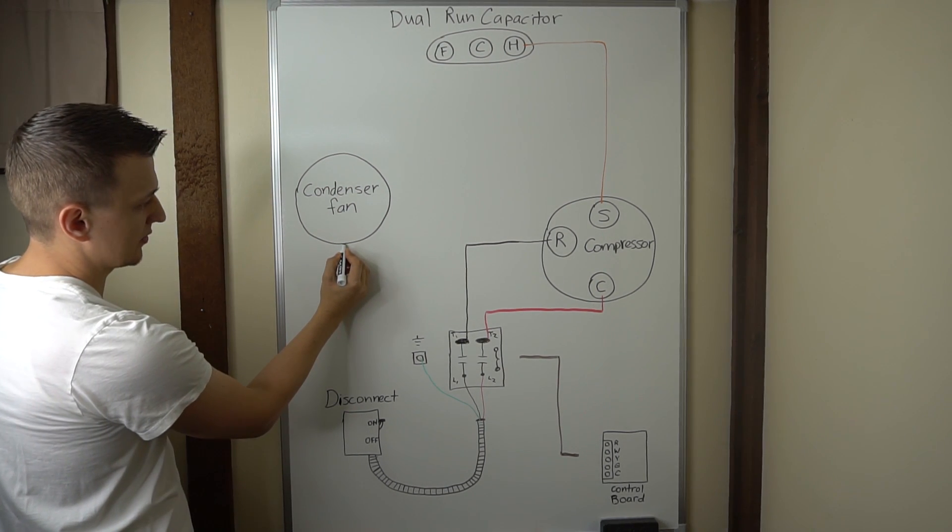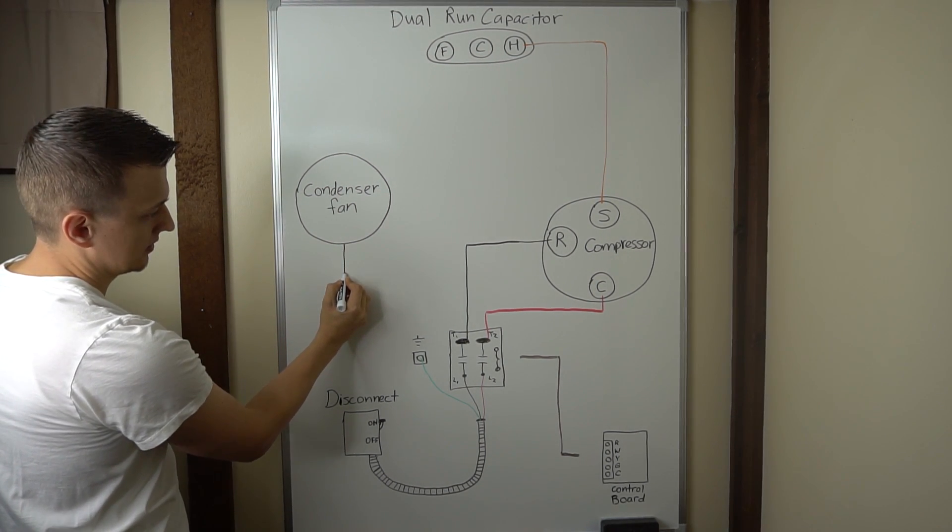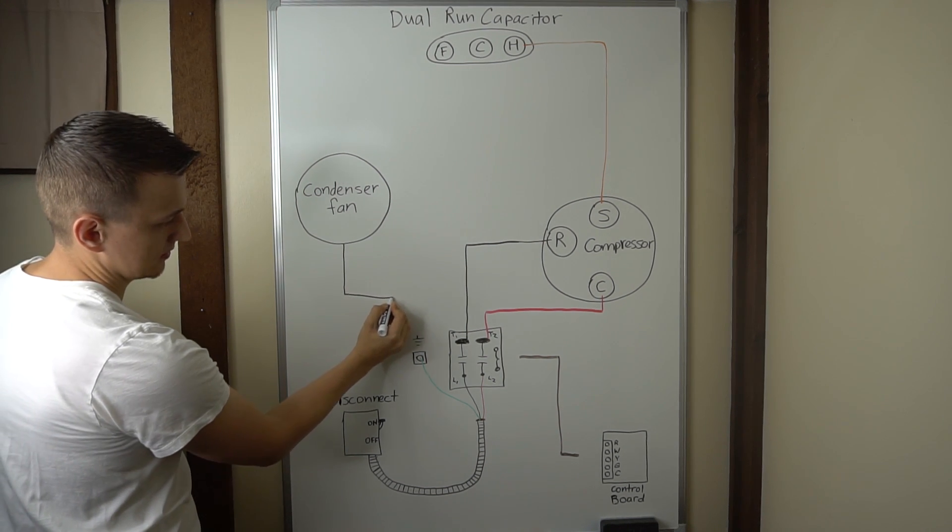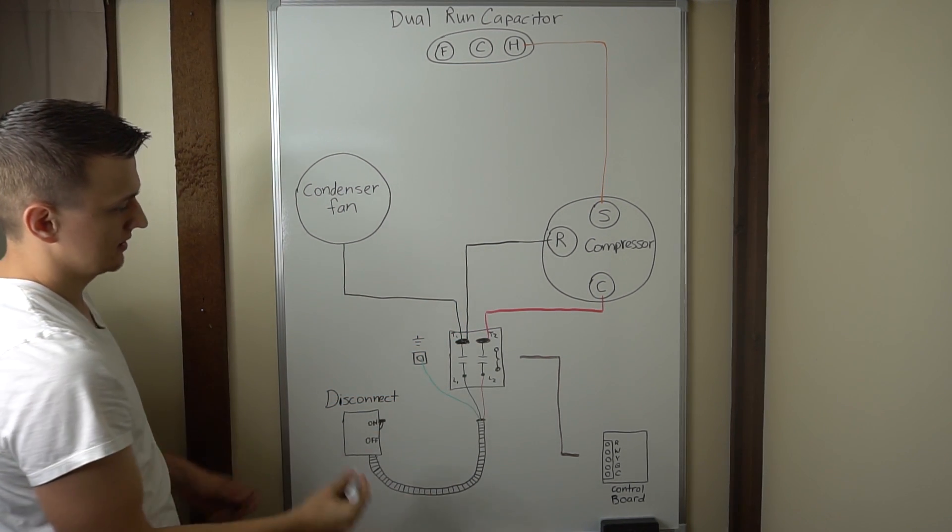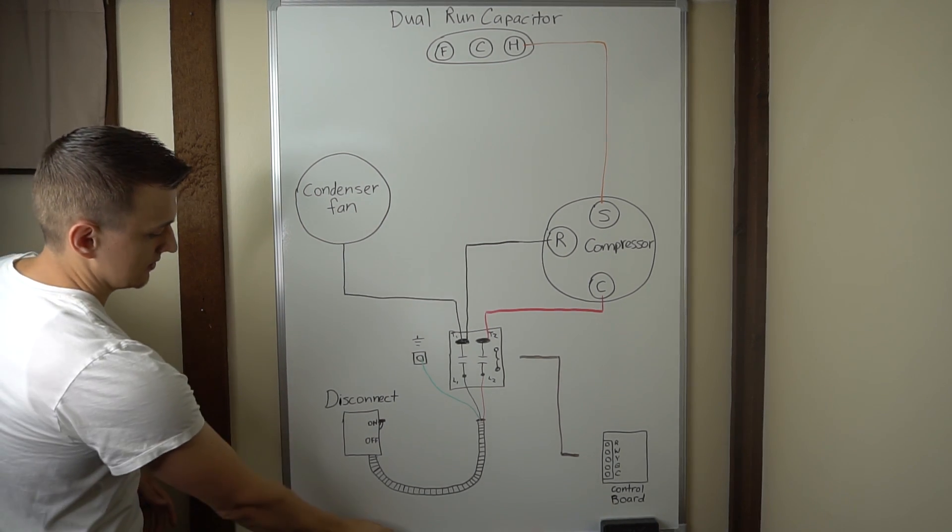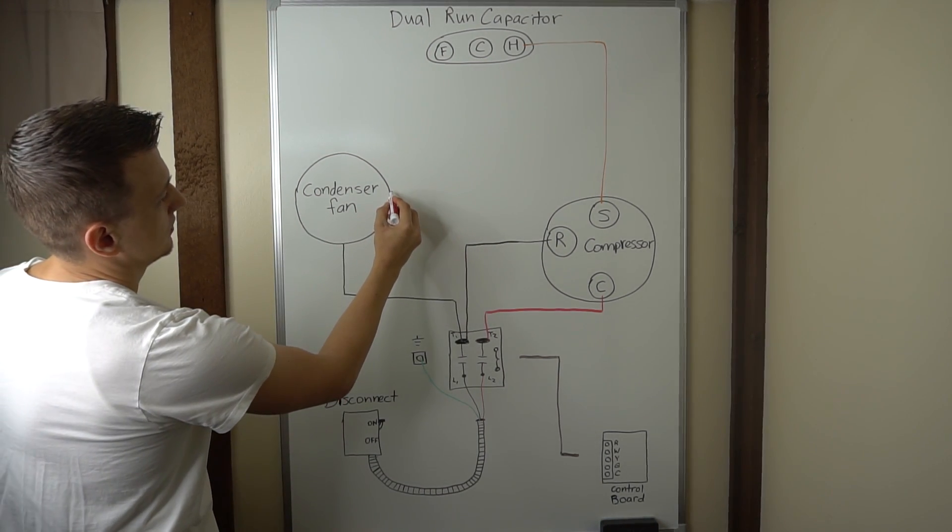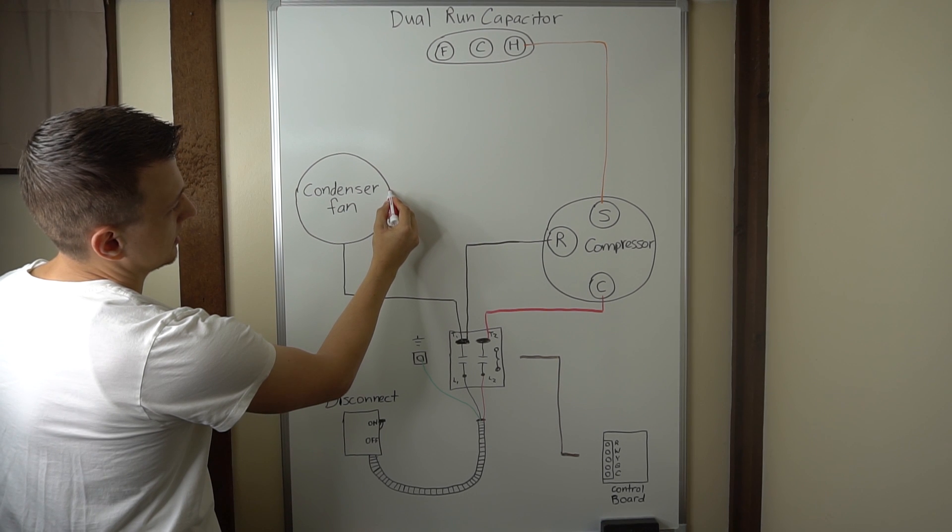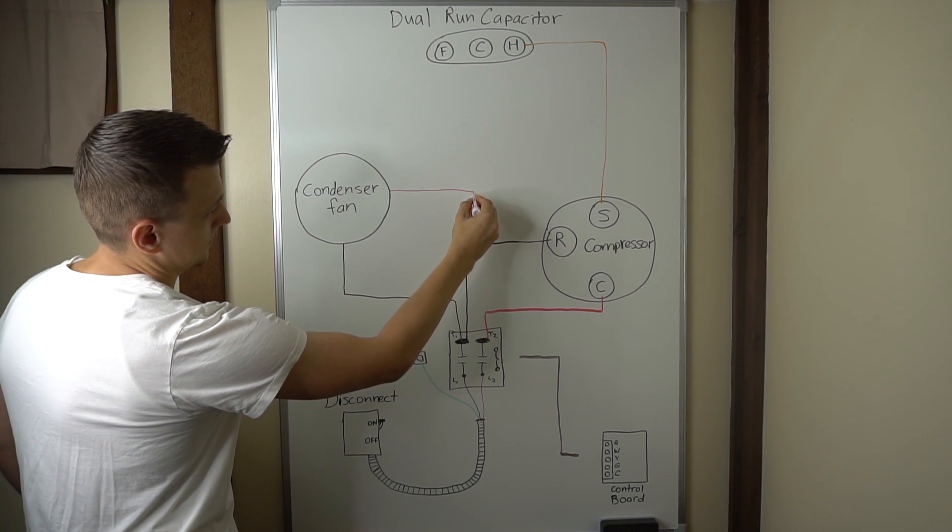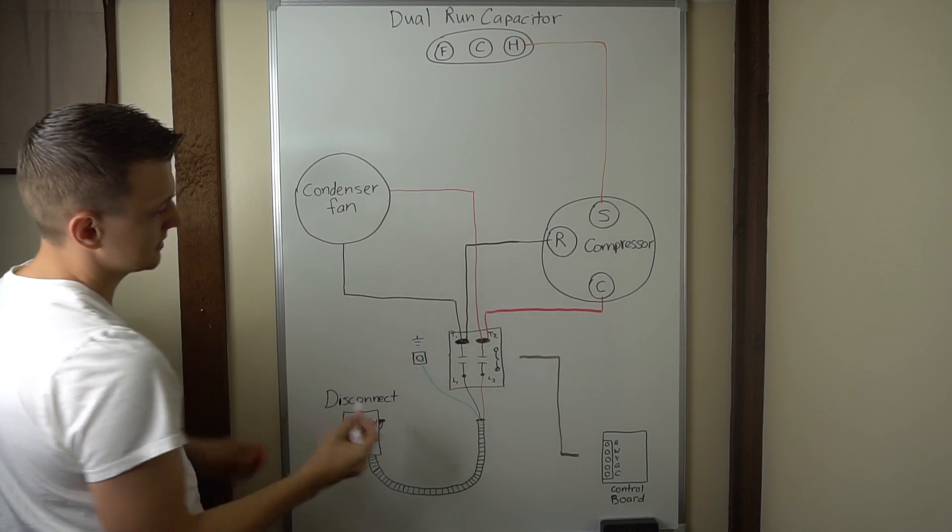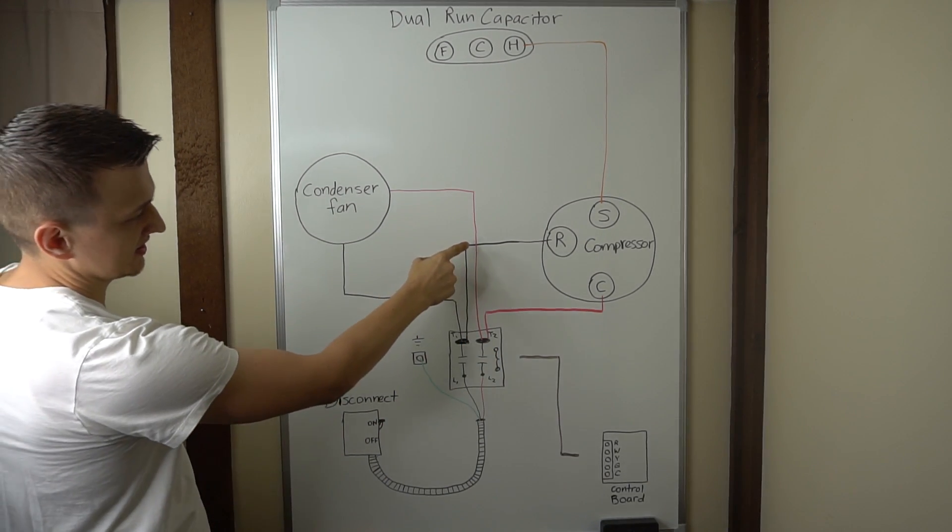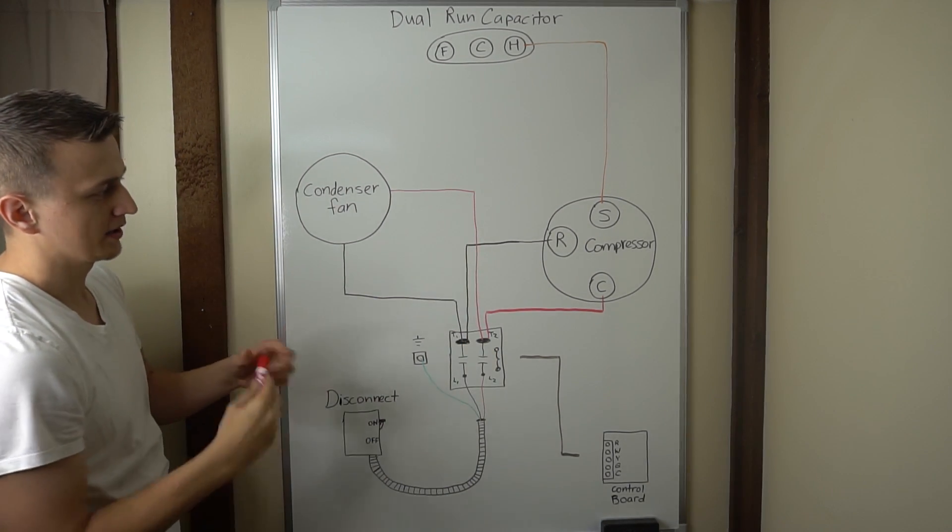So let's see what that will look like. So you have three wires coming out of your condenser fan. Let's start with this one. Like that. The second wire will go to the other side of the contactor. Like that.